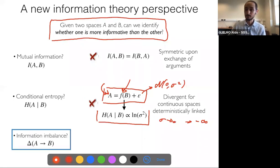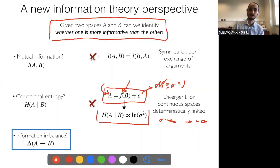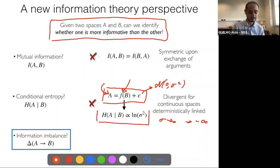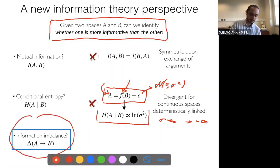However, conditional entropy has another problem. Under the very common situation where one feature space A is an explicit deterministic function of another space plus independent noise with some standard deviation sigma, the conditional entropy diverges as sigma goes to zero — it goes to minus infinity — which is problematic in practice since many spaces are connected by a map.